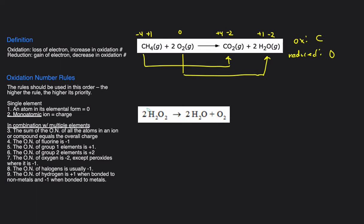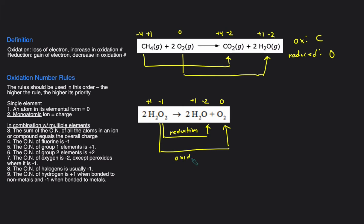Let's take a look at one last example — this is an interesting one. Let's start by assigning the oxidation numbers. H is positive one, O is negative one here because this is peroxide. H is positive one, O is negative two, and O2 is in elemental form so it's zero. H stays the same throughout, so H is neither oxidized nor reduced. But O: depending on which one you look at, it went from negative one to negative two — that would be reduction, because that's a decrease in oxidation number. But it also went from negative one to zero, which is an increase in oxidation number — that's oxidation. So in this case, oxygen is both oxidized and reduced. It's one element that's both oxidized and reduced, which is a more rare example, but it's something that could be thrown at you on a test.